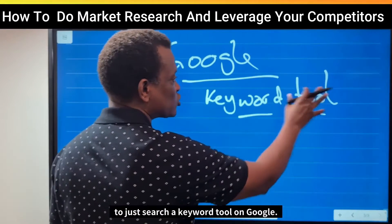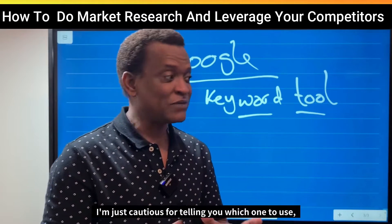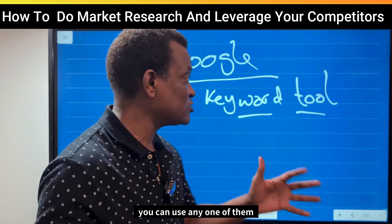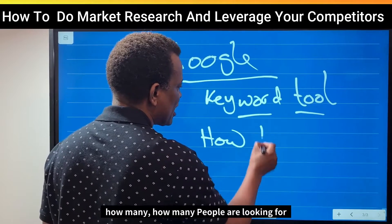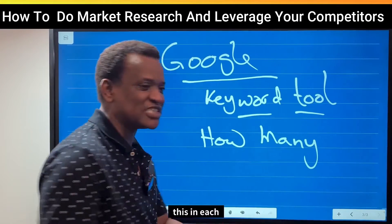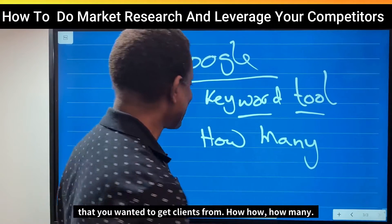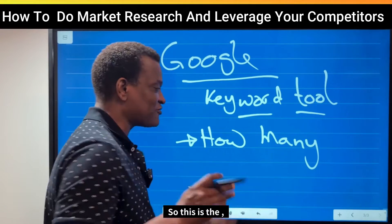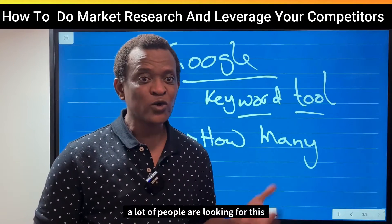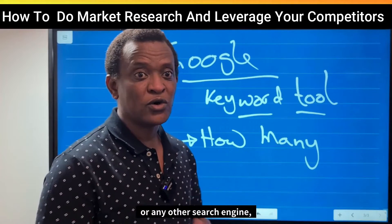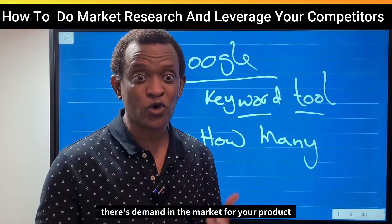Also, Google will suggest some keywords, so use those suggested keywords from Google and then go to any keyword tool. I'm not affiliated with any one of them, so I'm cautious about telling you which one to use — you can use any one of them. They will show you exactly how many people are looking for this in each country, so you can choose your own country or the country you want to get clients from. When you know that a lot of people are asking about it, you have established that there is demand in the market for your product.